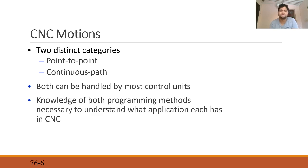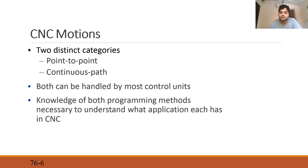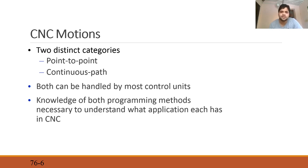Continuous path operations include all milling machine operations: side milling (contour milling), pocketing, slotting, and face milling. These are the main broad operations of milling machines. In a continuous path operation, the control has to be more precise because the tool is always moving at a certain calculated feed and speed, and that is very essential.